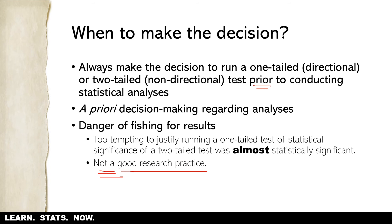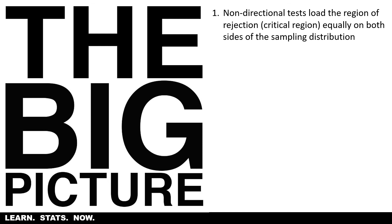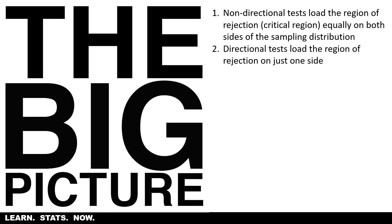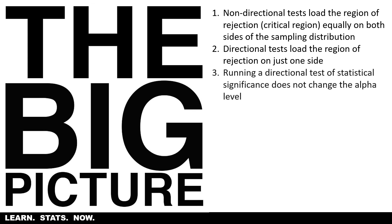You need a really strong reason to justify running a one-tailed test; otherwise the default is to run two-tailed non-directional tests. To sum up: non-directional tests load the region of rejection equally on both sides of the sampling distribution and are the most common tests. Directional tests load the region of rejection on just one side — that's why they're called one-tailed tests. Running a directional test does not change the alpha level; alpha stays the same at 0.05, it's just all loaded on one side.